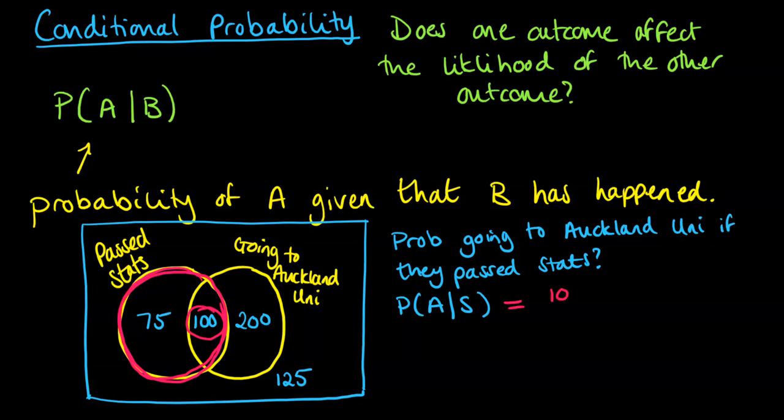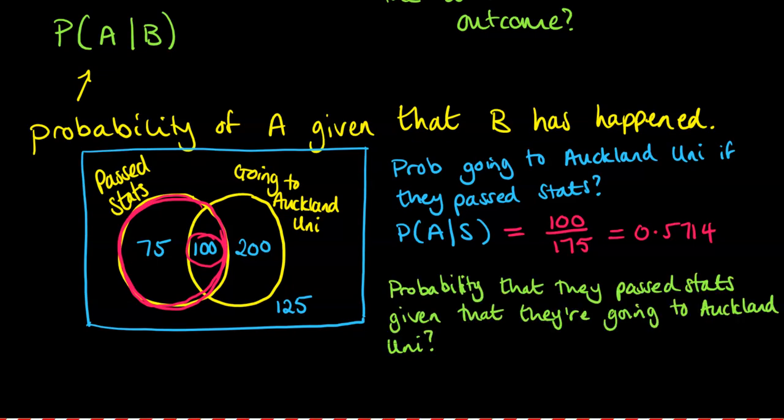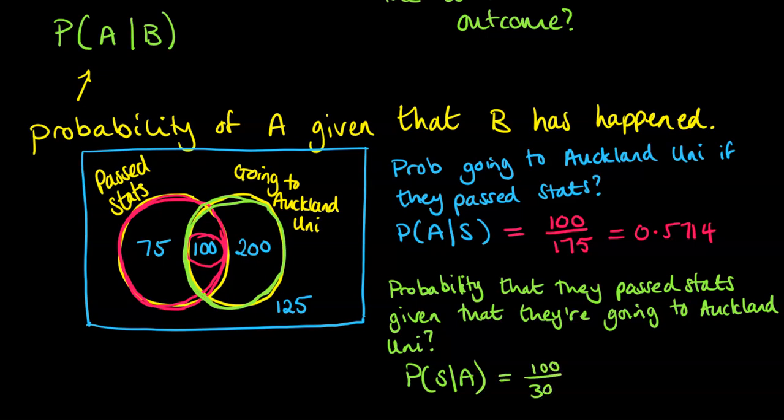It's really important you get these the right way around. If we'd done this the other way - the probability that they passed stats given that they're going to Auckland Uni - then the domain we're looking at now is the going to Auckland Uni circle, which is a total of 300. And then we want of them the ones that had passed stats. So this is the probability of passing stats given that they've gone to Auckland Uni, which would be 100 out of 300.